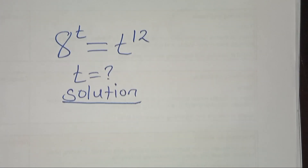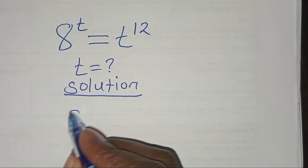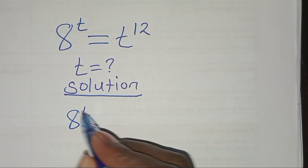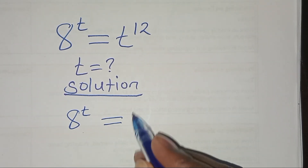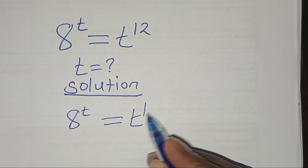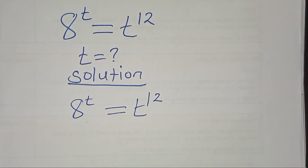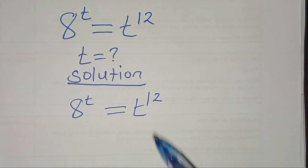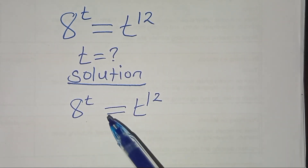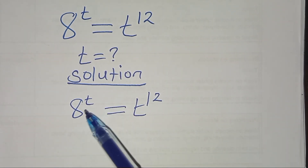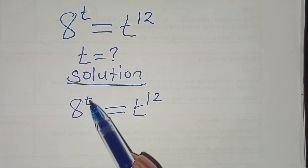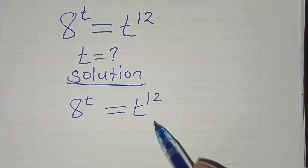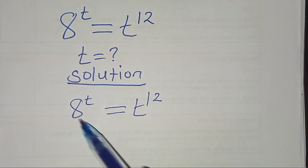Now, for the solution, we have that 8 to the power t is equal to t to the power 12. The first thing here is to put the variable t on one side and the constant term on the other side.